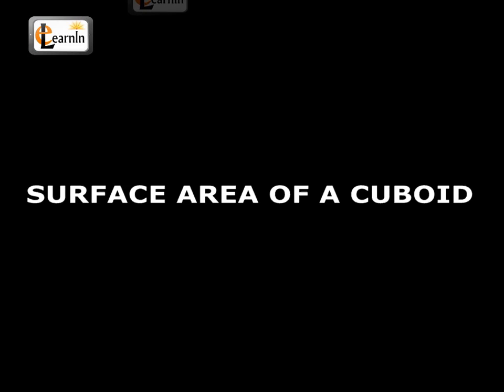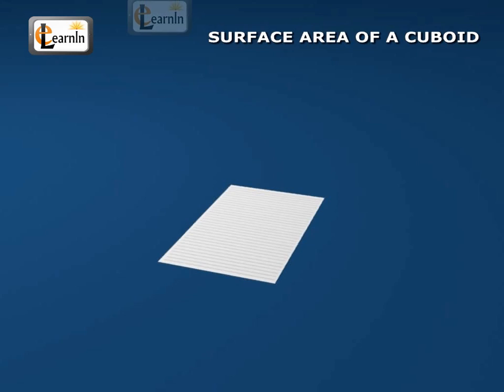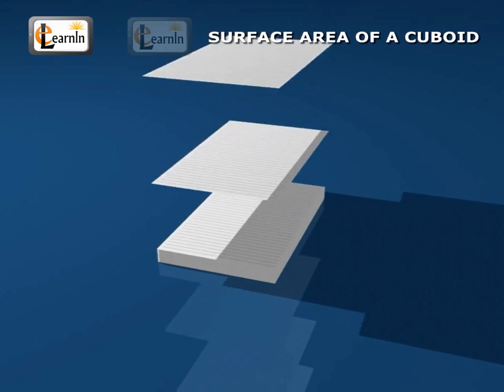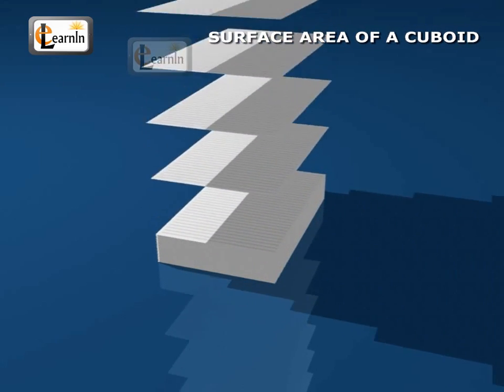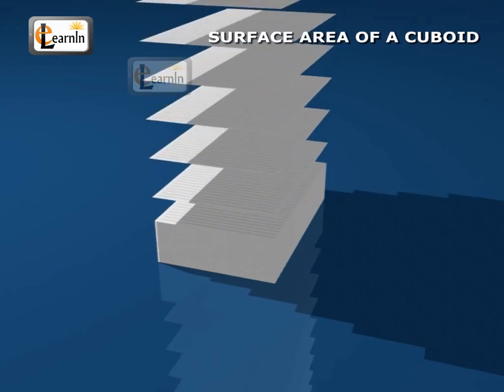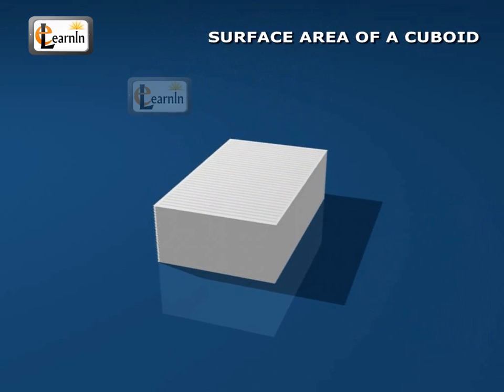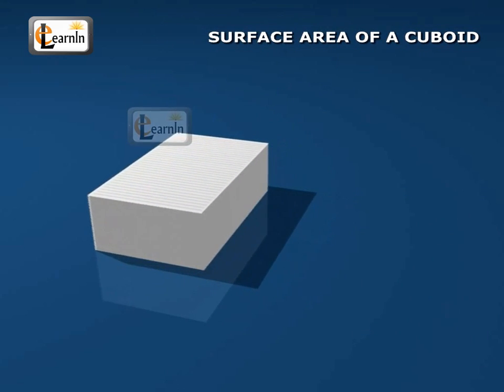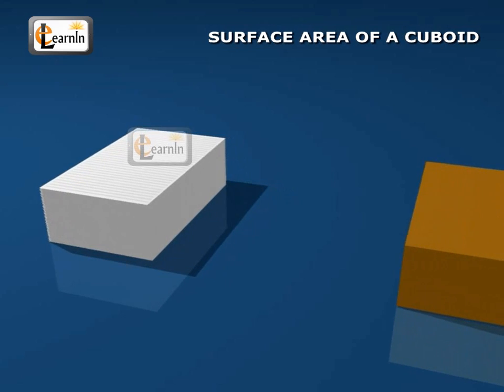Surface area of a cuboid. Have you looked at a bundle of many sheets of paper? How does it look? This is how a bundle of papers would look like. That makes up a cuboid.